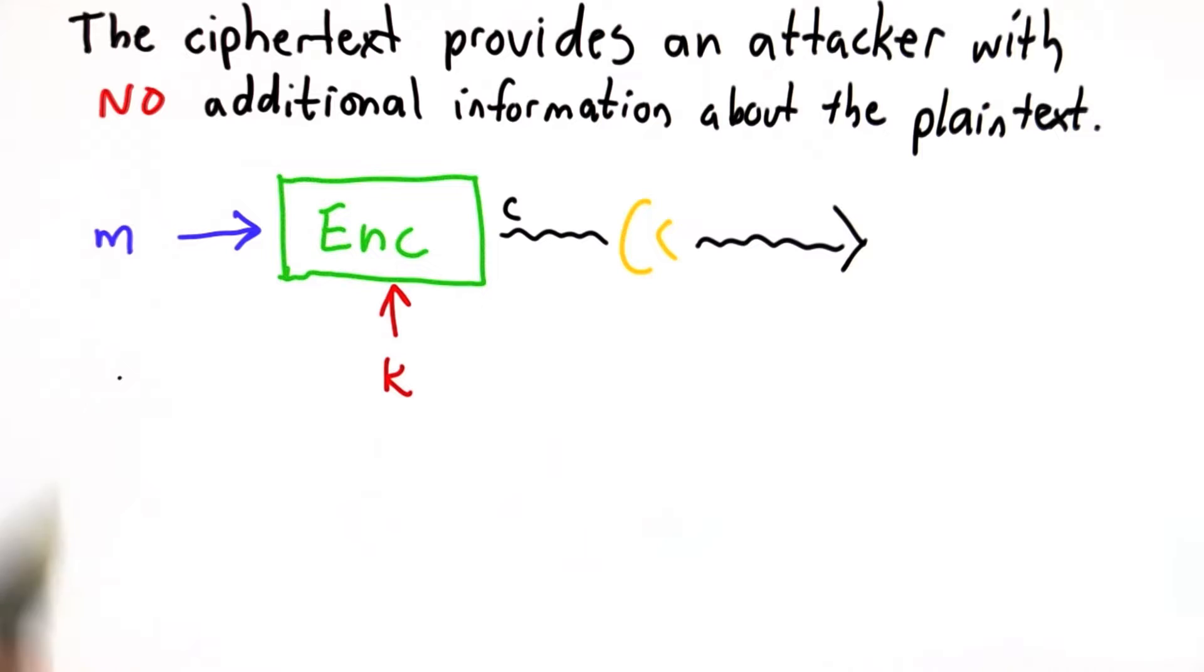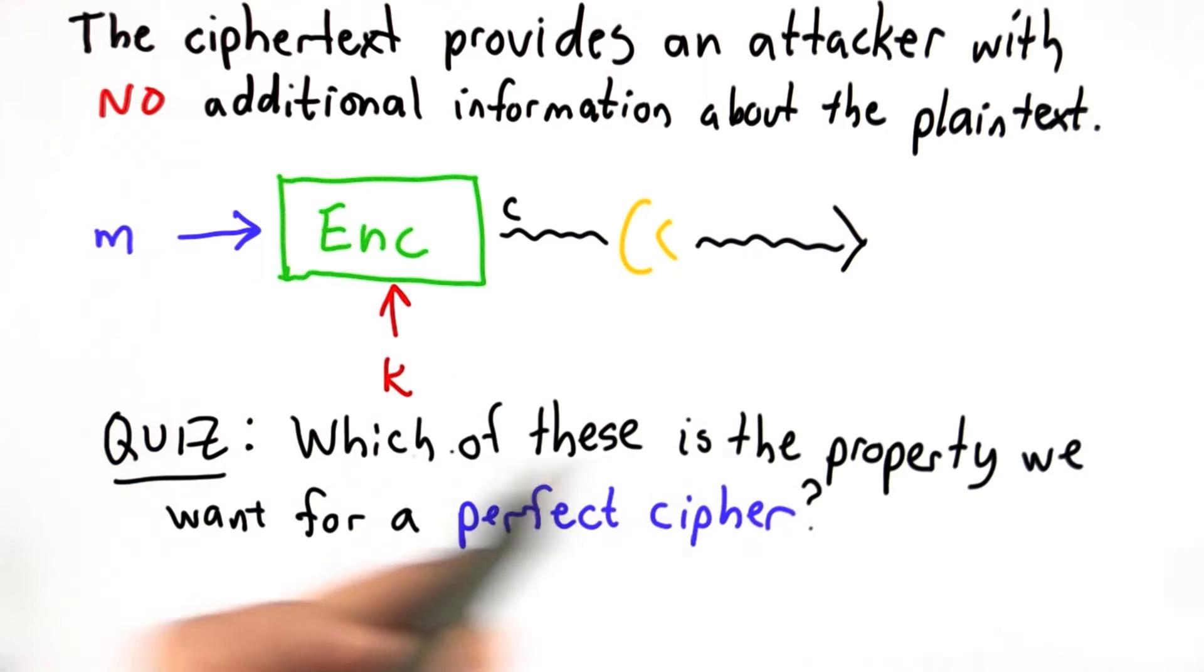If you followed the definition of conditional probability, you should be able to decide how to define that formally. We'll make that a quiz. The question is which of these is the property that we want in order for a cipher to be perfect? That is, to have this property that the ciphertext reveals no information about the plaintext.